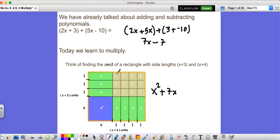X pieces and then you have 1, 2, 3, 4, 5, 6, 7, 8, 9, 10, 11, 12 one pieces. So the total area of a rectangle with side lengths x plus 3 and x plus 4 is x squared plus 7x plus 12.